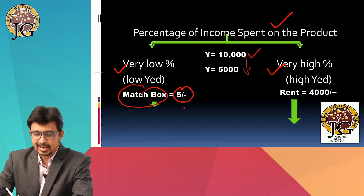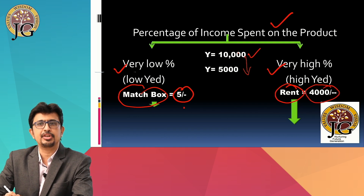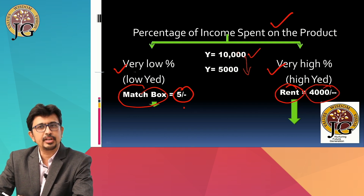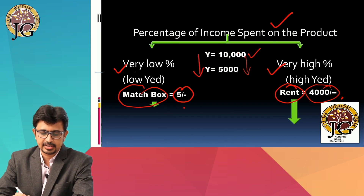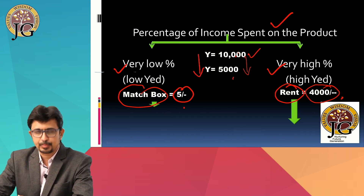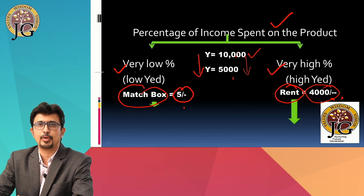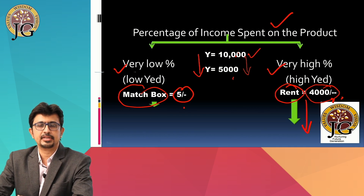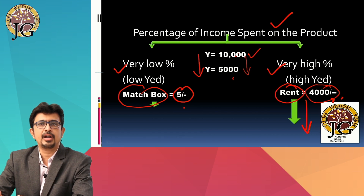On the other hand, items like house rent — on which the consumer spends a substantial portion of income, say 4,000 out of 10,000 — will show high income elasticity. If income decreases from 10,000 to 5,000, the rent of 4,000 per month will not be affordable, and the consumer will have to change the house, reducing demand by a very large extent. Any product on which the consumer spends a significant portion of income will have very high income elasticity of demand. These are the three important factors affecting income elasticity.